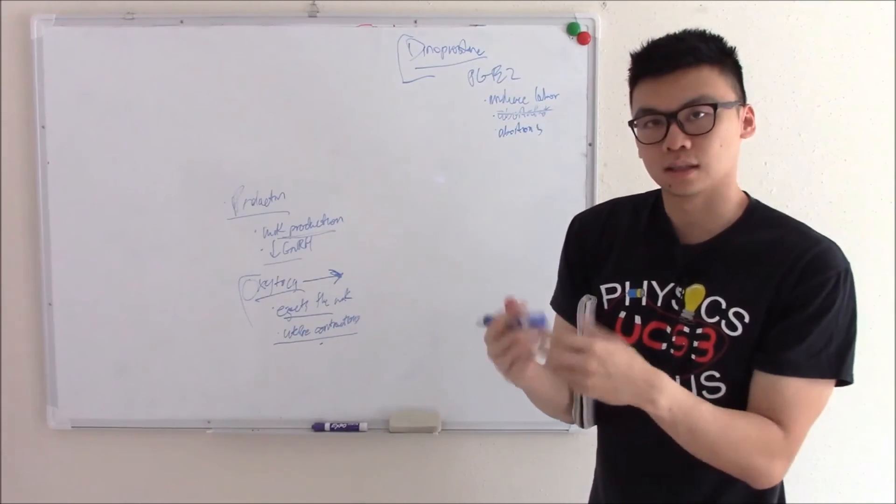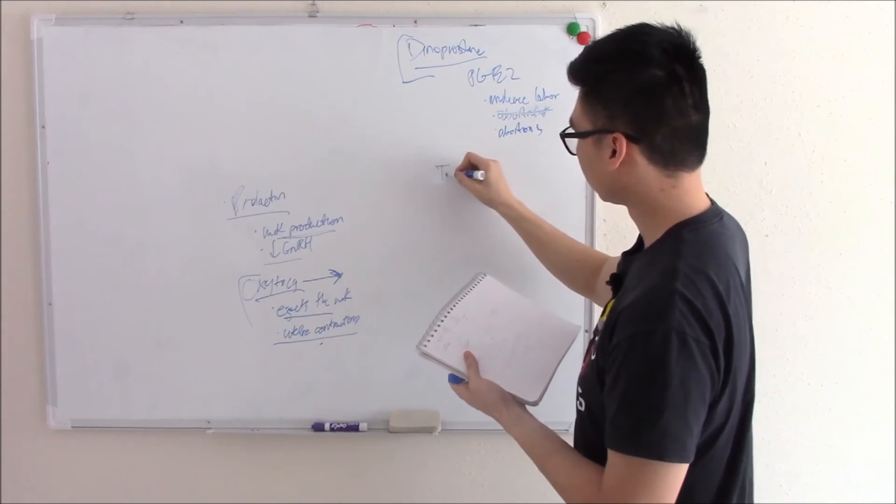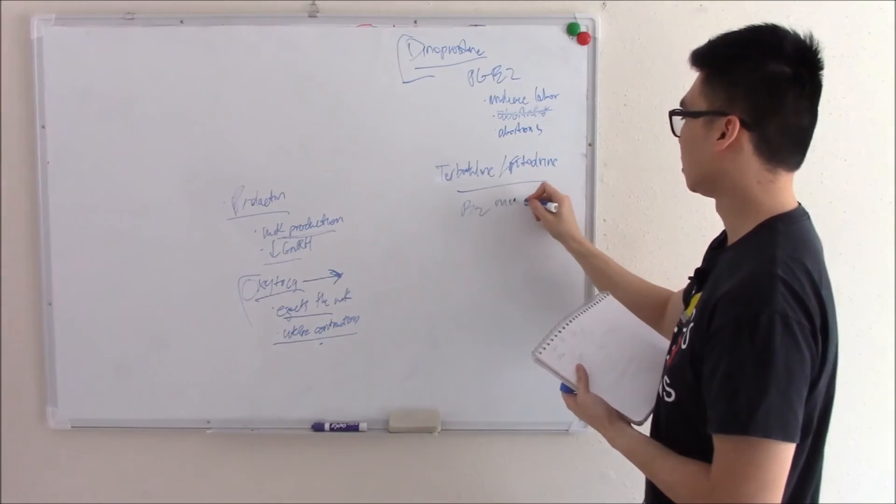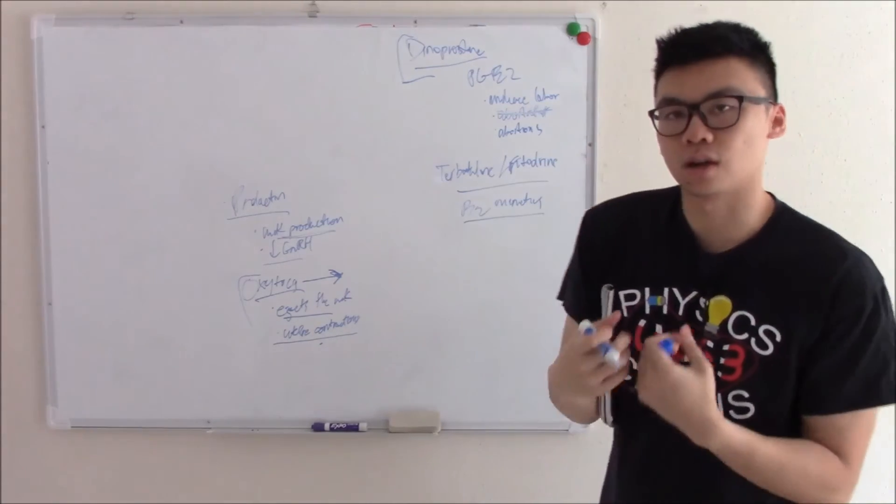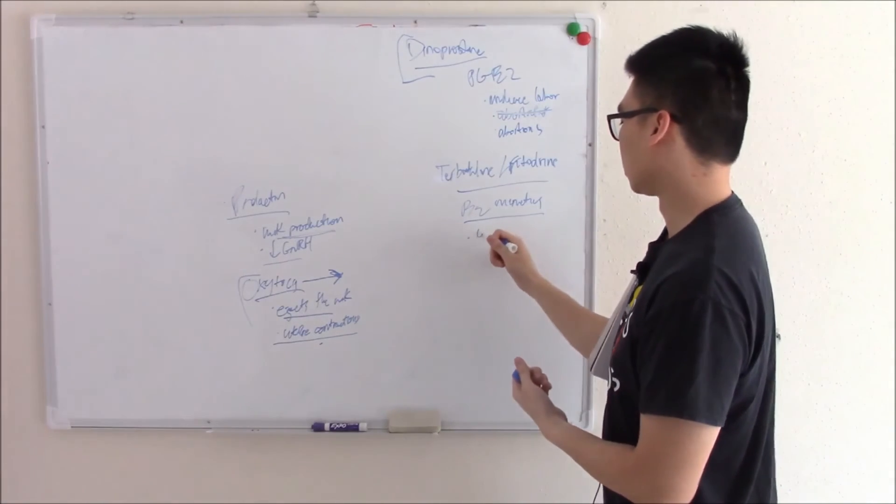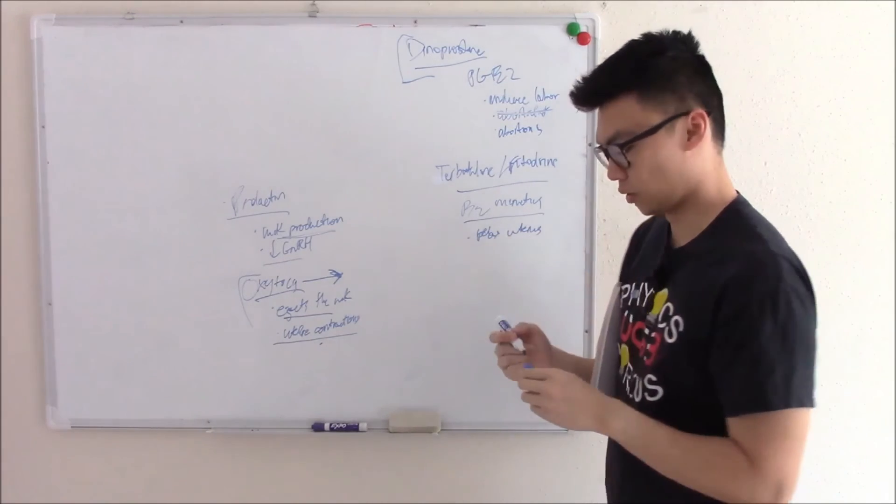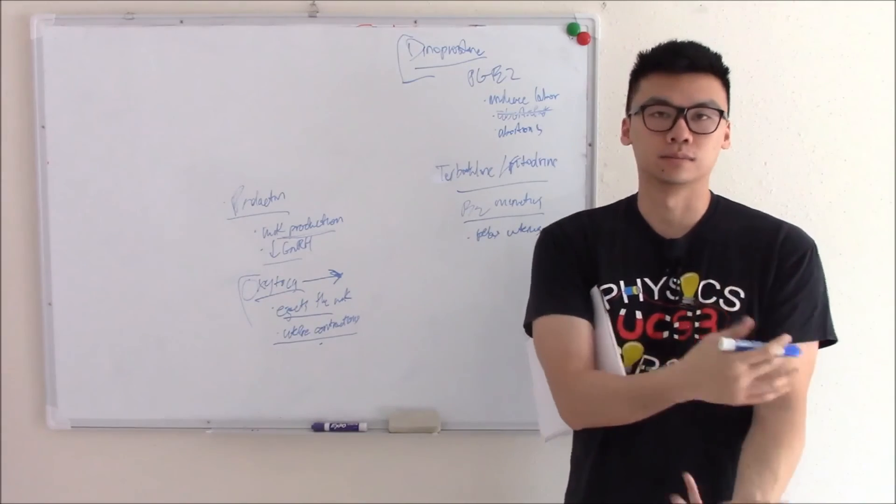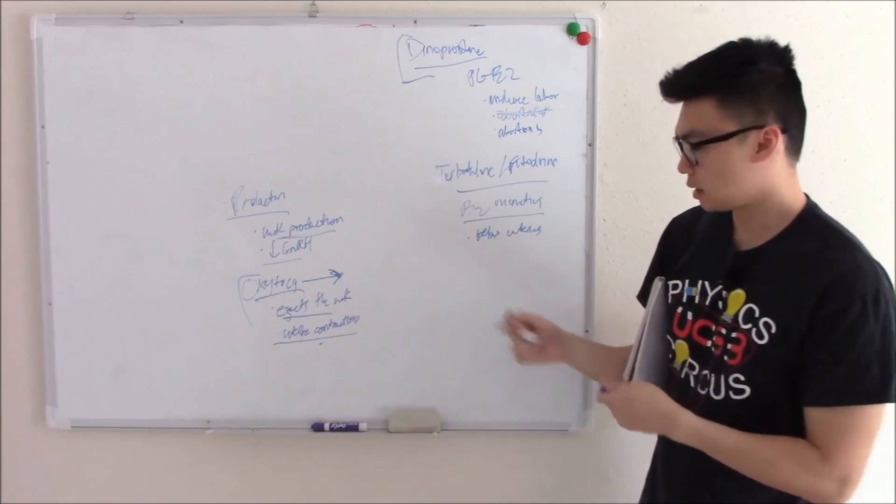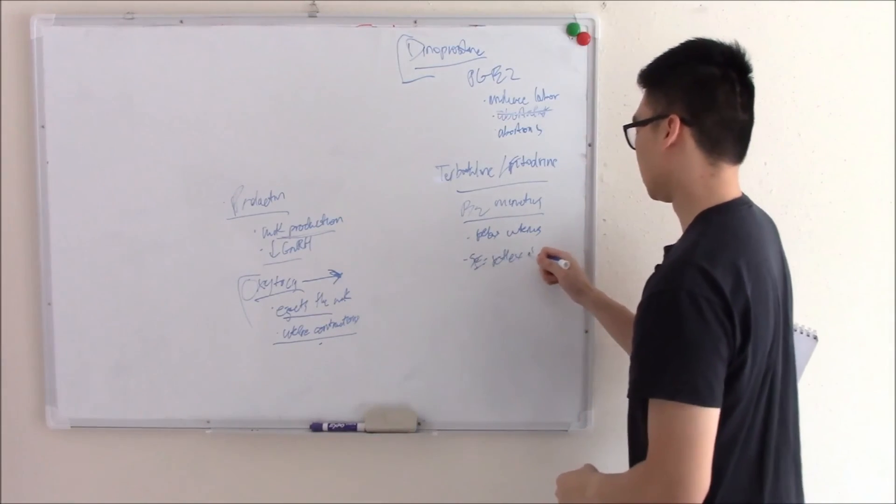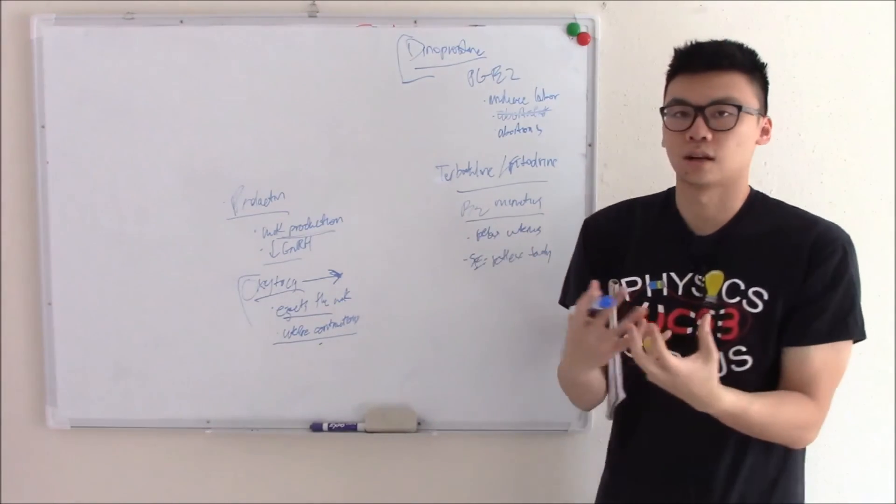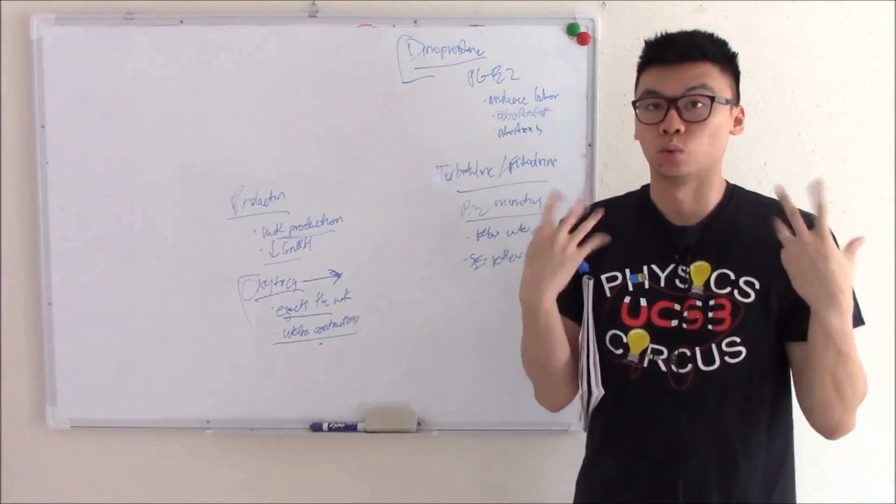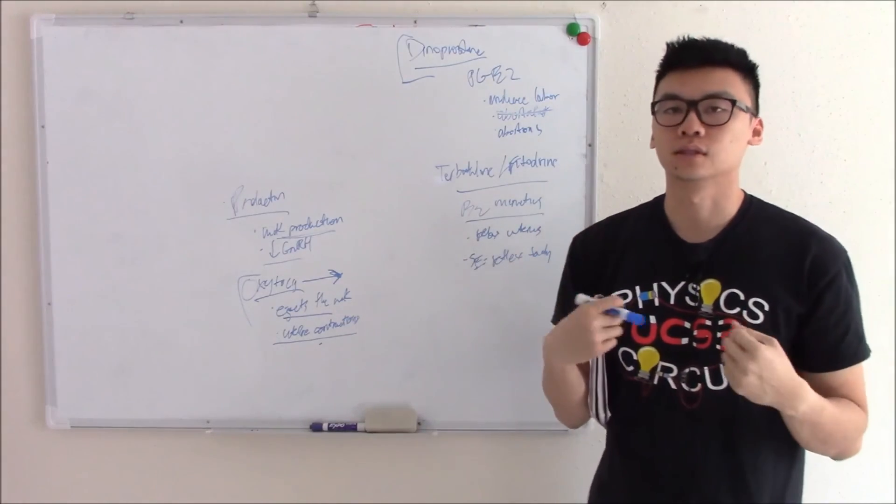Is there something that reduces contractions? The things that can reduce contractions are going to be your terbutaline or your ritodrine. Both of these are beta-2 agonists or mimetics. Bind to beta-2 and cause relaxation of the uterus. One of the most common reasons we give tocolytics is if a mother comes in with premature labor and we want to buy some time to give the mother some corticosteroids, help the baby's lung mature before we deliver. A side effect of these is reflex tachycardia or hypotension. Beta-2 mimetics cause relaxation of your smooth muscle, of your uterine muscle, and also cause relaxation of your blood vessels. That can cause drop in blood pressure. Your body realizes that and tries to maintain its cardiac output by increasing your heart rate. So you get reflex tachy.